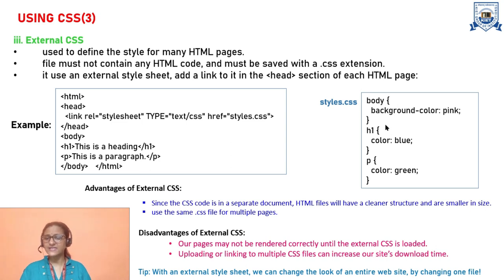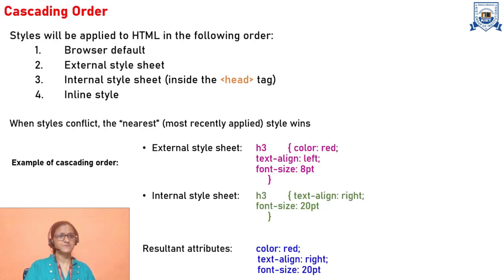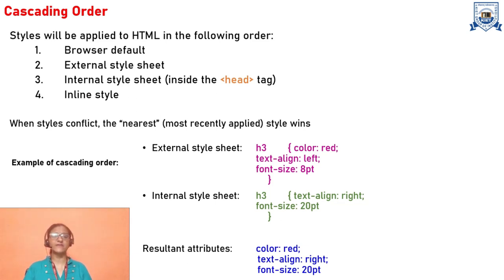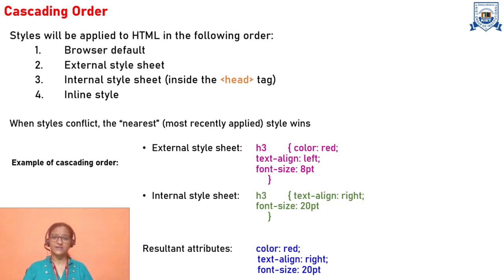What we must remember is that with an external style sheet, we can change the look of the entire website by changing one file, because one CSS file can be linked to multiple HTML pages. We can put style with inline, internal, external, or by browser default. If different styles are given for the same element, which one will override? Style will be applied to HTML in the following order: browser default first, then external, then internal style sheet, and finally inline style.